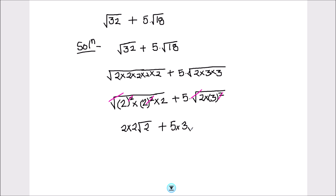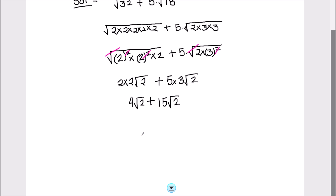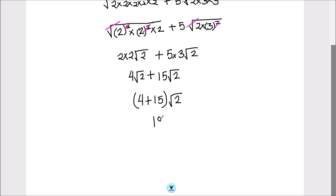So this is 4 square root of 2, plus 5 times 3 is 15, giving 15 square root of 2. Now we have the same root with the numbers, so we can add the two numbers: 4 plus 15 times square root of 2, and 4 plus 15 is 19, so that's 19 square root of 2.